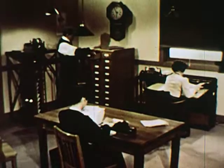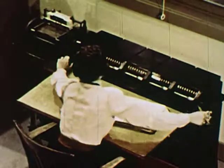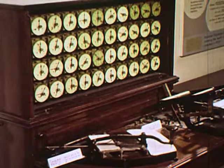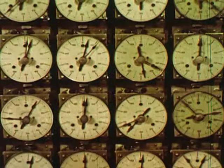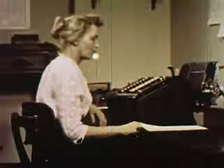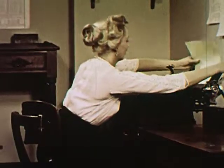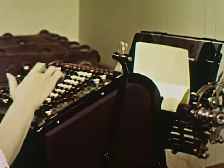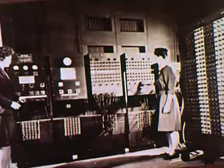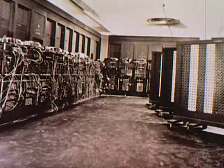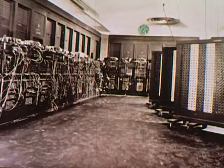The need for faster calculating machines became apparent as the population expanded and more data had to be processed continually. The United States census of 1890 was processed on this tabulating machine using punched cards in one and a half years. Manual methods would have taken eight years. Many other types of calculating machines were developed to handle the increasing volume of business, economic, and scientific problems. This early ENIAC electronic computer was used to solve problems in two hours that would have taken a mathematician working with a slide rule 100 years.